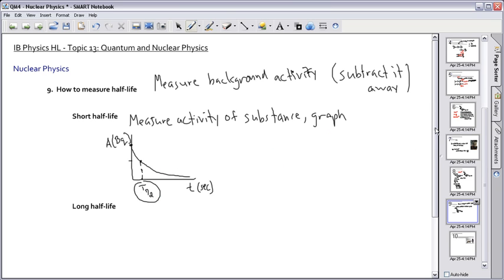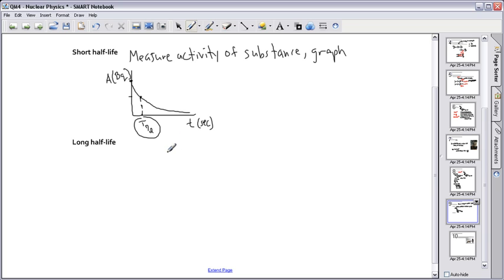But then if we have a longer half-life, we'll have to use this equation here. So instead of N equals N₀e^(-λt), we can actually say A equals A₀e^(-λt). So in this case here, if we have a long half-life, that means that it's very difficult.